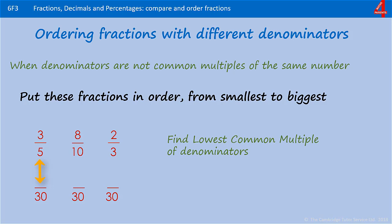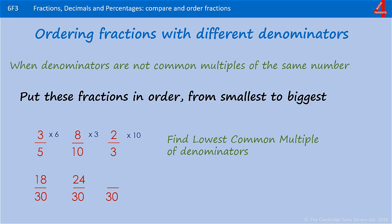5 and 10 will both go into 30, and so will 3, so our lowest common multiple is 30. Remember to do the conversions directly beneath each fraction that you're converting, so it's easy to see which belongs to which. To get from 3 fifths to 30ths we multiply the 5 by 6, so we're going to multiply the 3 by 6 — our numerator now becomes 18. To get from 10 to 30 we multiplied by 3, so we'll do the same with the 8 to get 24. For 2 thirds we multiplied the denominator by 10 to get 30, so we're going to multiply the numerator by 10 to get 20.